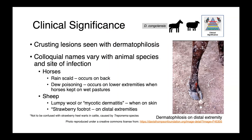In sheep, lumpy wool or mycotic dermatitis is the term when it's on the skin — though it's not actually a fungal infection, just the colloquial name. Strawberry foot rot refers to infections on the distal extremities. Colloquial names can be quite problematic, so make sure not to confuse strawberry foot rot with strawberry heel warts in cattle, which are caused by Treponema species — a very different bacteria that we'll talk about later.